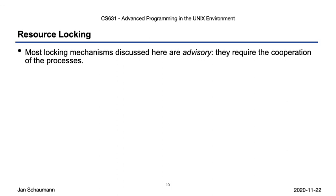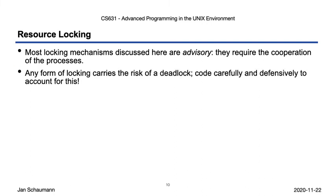To summarize, most locking mechanisms discussed here are advisory — they require the cooperation of the processes. Since we're talking about coordinating cooperating processes, it shouldn't come as a surprise that it's easy to make mistakes here, mistakes that can lead to a deadlock. Make sure to account for this possibility when you're writing code that handles locks.